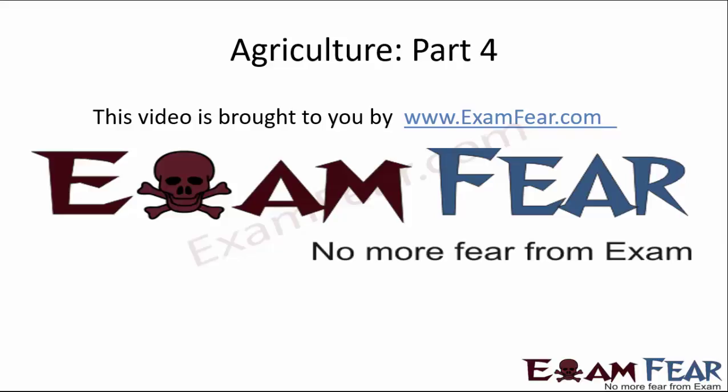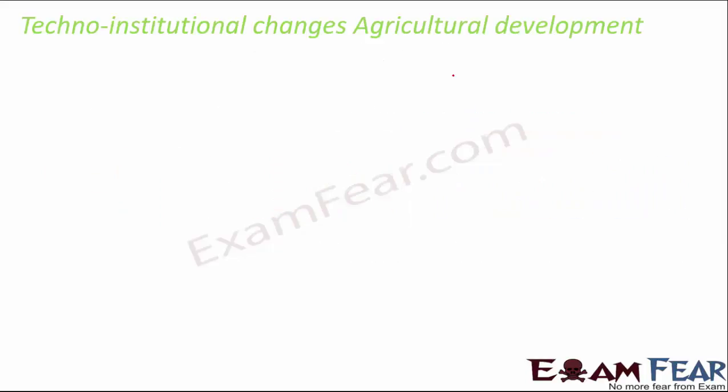This video on agriculture part 4 is brought to you by examfear.com. We will talk about some of the techno-institutional changes in agricultural development. India is a country with a huge population and it is important that we meet the demands of the increasing population. For that, agriculture productivity has to be really good, so a lot of efforts have been made. We are going to talk about some technical changes — advancements in technology as well as changes brought in by institutions.